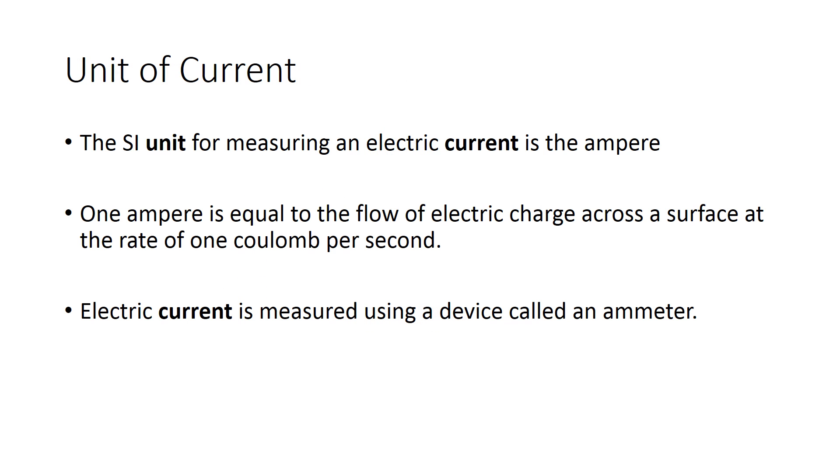The SI unit for measuring electric current is the ampere. One ampere is equal to the flow of electric charge across a surface at the rate of one Coulomb per second. Electric current is measured using a device called an ammeter.